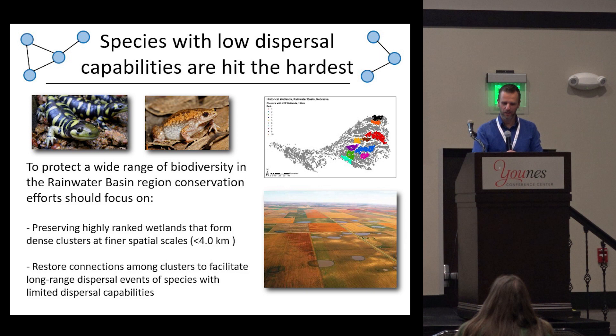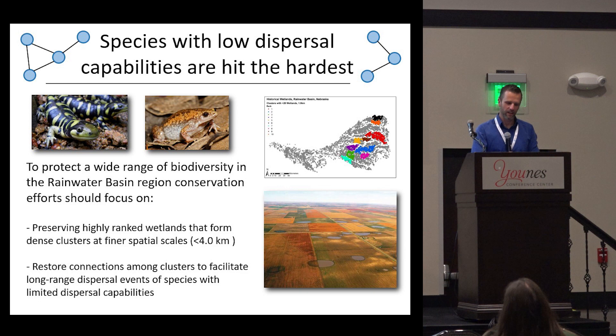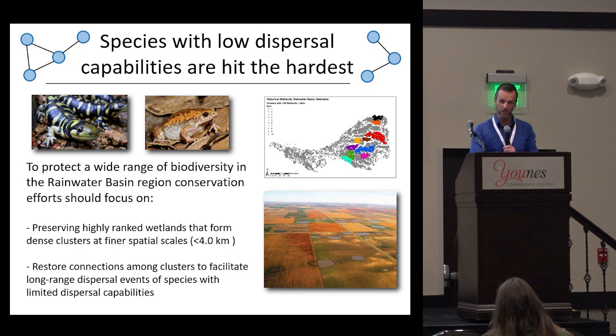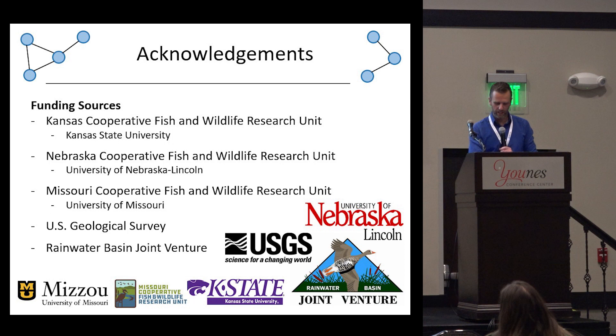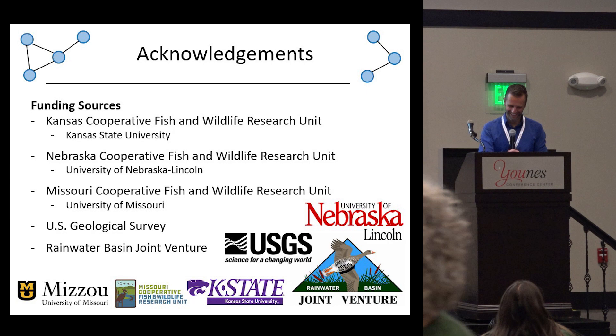To protect a wide range of biodiversity in the Rainwater Basin, conservation efforts should really focus on preserving these highly ranked wetlands that form dense clusters at finer scales, especially for species that might be able to move up to about four kilometers or less. We should also restore connections among these clusters to facilitate the long-range dispersal events that don't happen often but sometimes occur, maintaining this metapopulation structure. I'd like to thank the Kansas co-op unit, the Missouri co-op unit, and all the co-op units involved. Thank you for your attention.